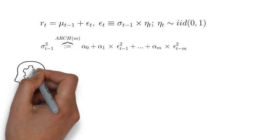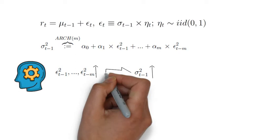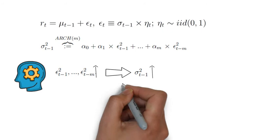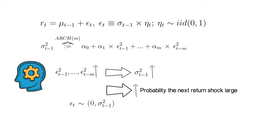Now let's look at the ARCH(m) variance parameterization to tease out some intuition. First, the variance of innovations sigma squared_{t-1} rises after large return shocks epsilon squared_{t-1} up to epsilon squared_{t-m}. Second, a rising variance increases the probability that the next return shock is again large. That is because epsilon_t has that distribution with the mean of 0 and the variance of sigma squared_{t-1}.